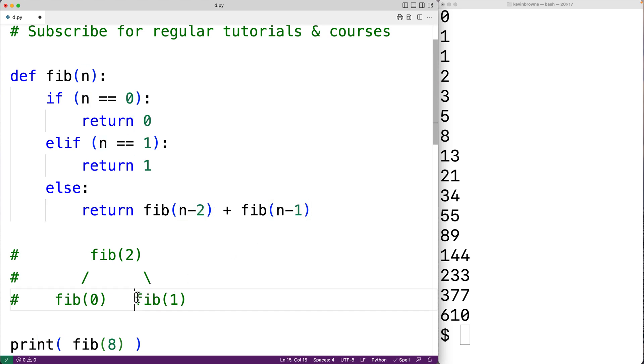And we know that fib(1) is going to return 1, and we know that fib(0) is going to return 0. So fib(2) is then going to be 1 because 1 plus 0 is 1.